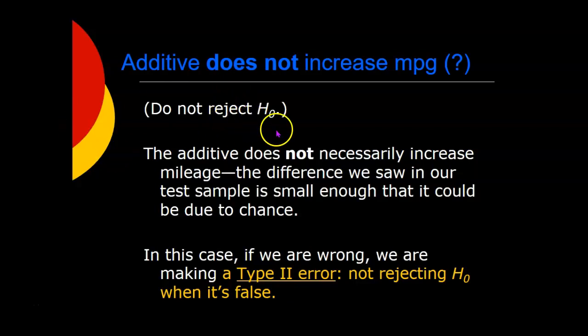On the other hand, if we don't reject the null hypothesis, we're saying, oh, this doesn't necessarily increase mileage. The difference we saw was small enough that it could be just due to chance. In that case, we might be right or we might be wrong. And if we're wrong, that would be a type two error, not rejecting the null hypothesis when it's false.